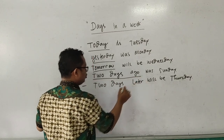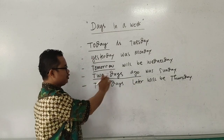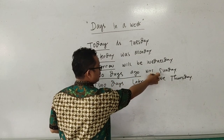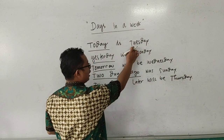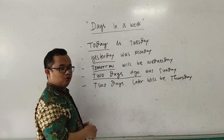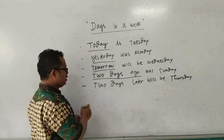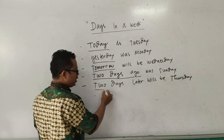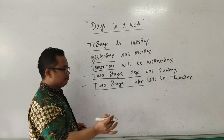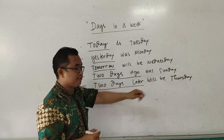Two days ago, dua hari yang lalu. Jadi kalau hari ini hari Selasa, maka dua hari yang lalu adalah hari Minggu. Two days later, dua hari lagi. Maka dari hari Selasa, dua hari lagi menjadi hari Kamis.